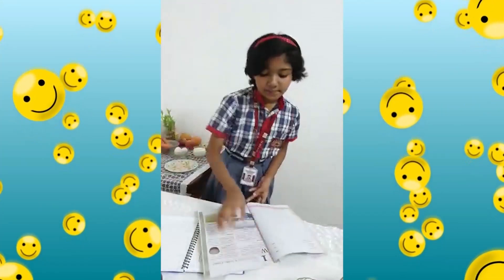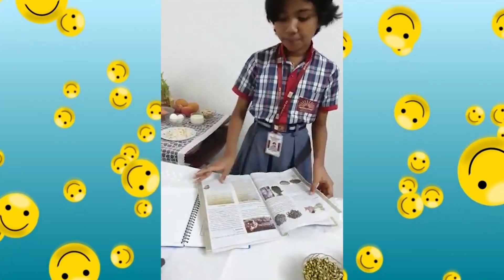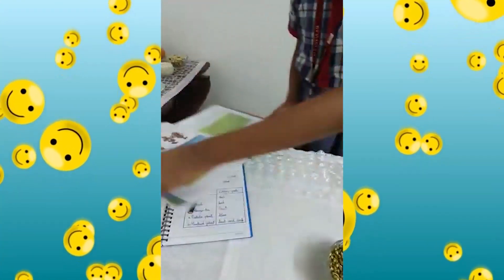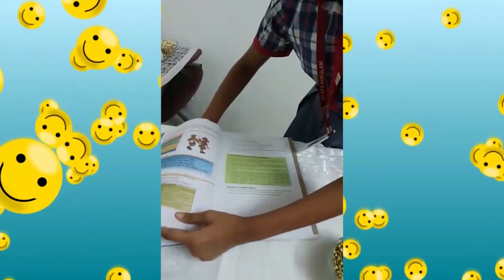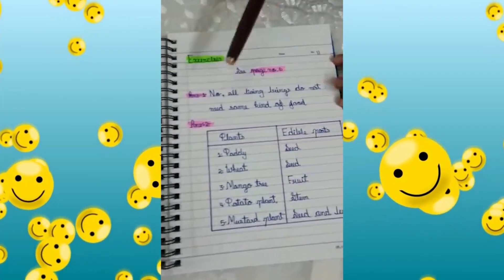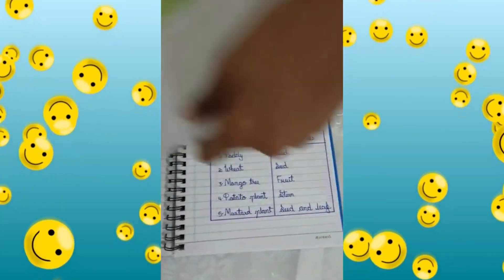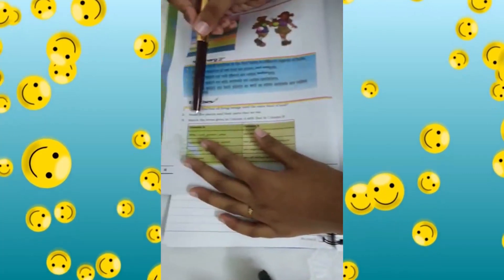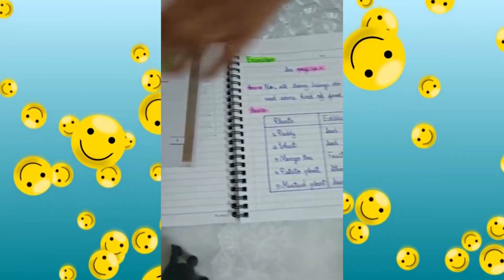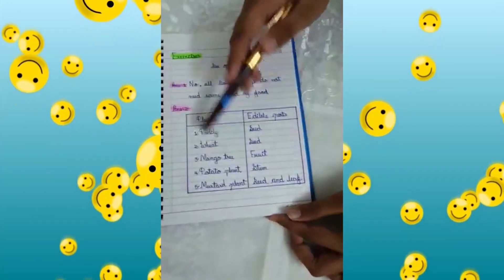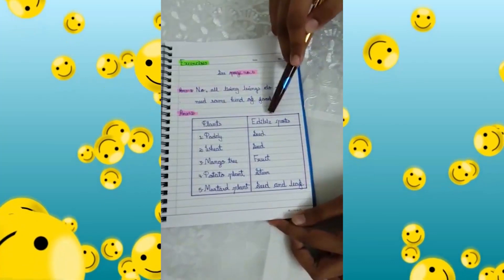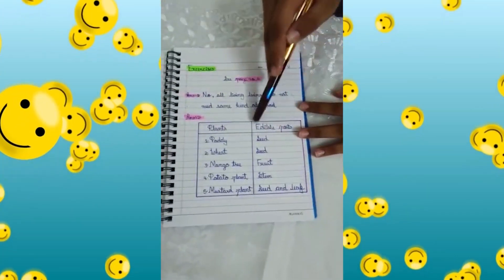The first question is: do you find that all living beings need the same kind of food? The answer is no. All living beings do not need the same kind of food. The second question: name five plants and their parts that we eat. Edible means eatable.